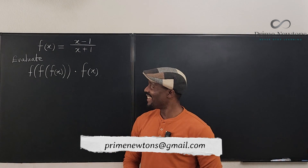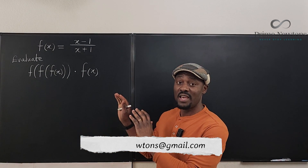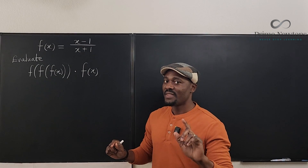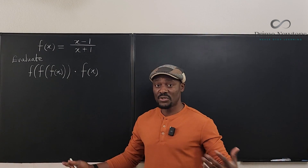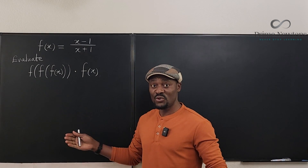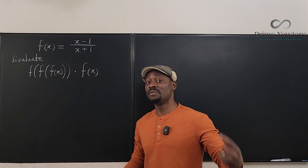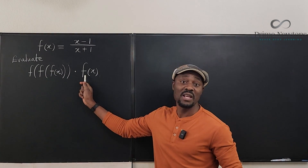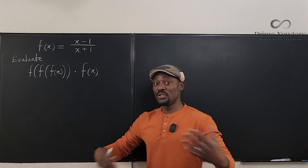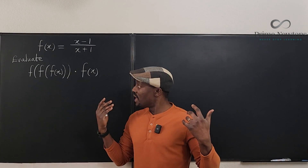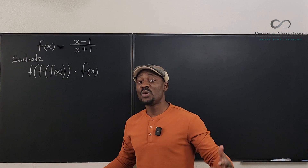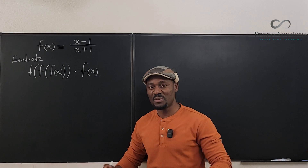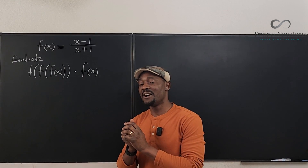Welcome to another video. This is not a functional equation, it is just composition. But whenever you solve some functional equations, this might be one of the strategies you may need to adopt, which is the composition of a function with itself. In this case, it looks like we're doing it three times, then multiplying it by itself. So you have to know how to compose a function with itself the required number of times.